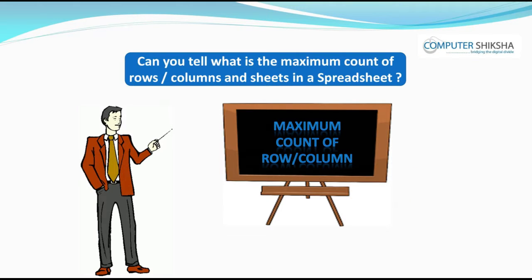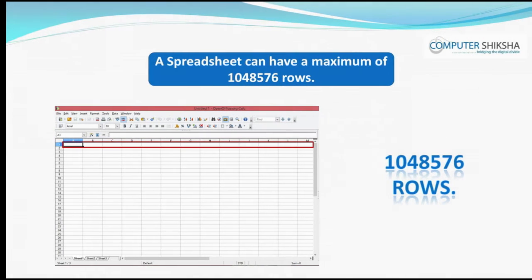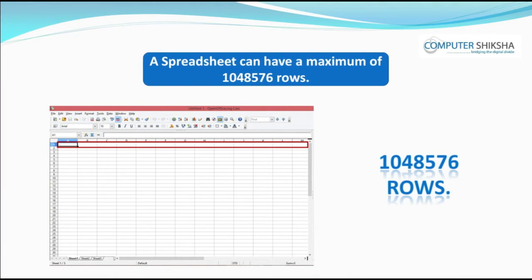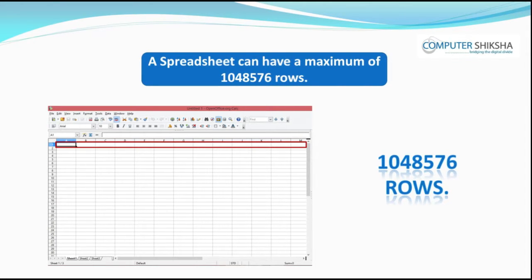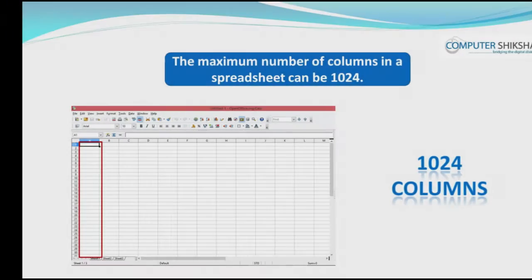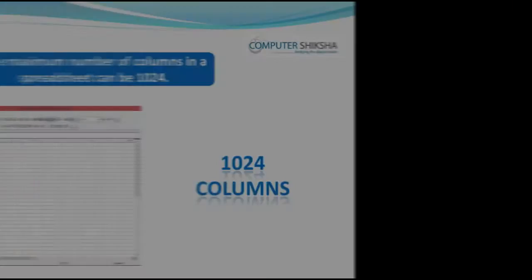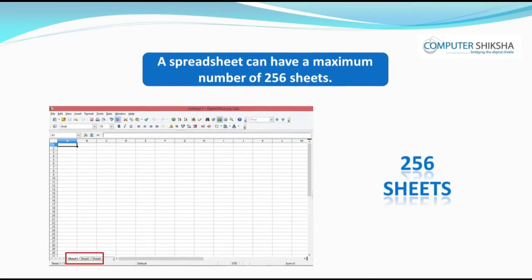Can you tell what is the maximum count of rows, columns, and sheets in a spreadsheet? A spreadsheet can have a maximum of 1,048,576 rows. The maximum number of columns can be 1,024, and the maximum number of sheets is 256.